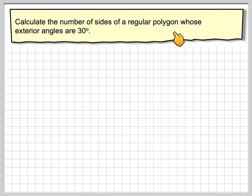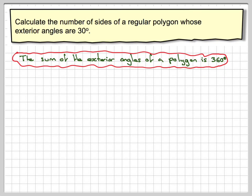Calculate the number of sides of a regular polygon whose exterior angles are 30 degrees. Now we know that the sum of the exterior angles of any polygon is going to be 360 degrees, so